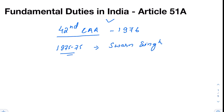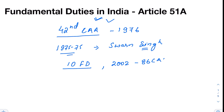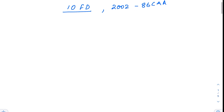The Swarn Singh committee recommended the inclusion of fundamental duties in the Constitution, and as a result, 10 fundamental duties were added. Later, in 2002, through the 86th Constitutional Amendment Act, an 11th fundamental duty was added, and now there are 11 fundamental duties in total.